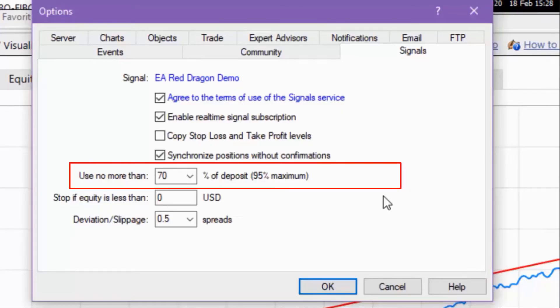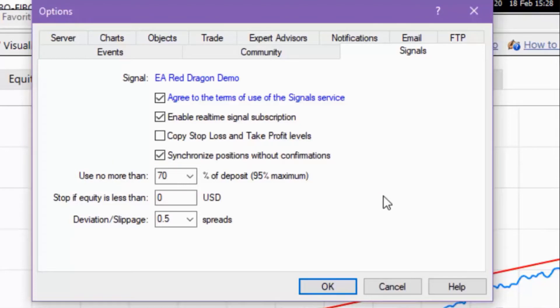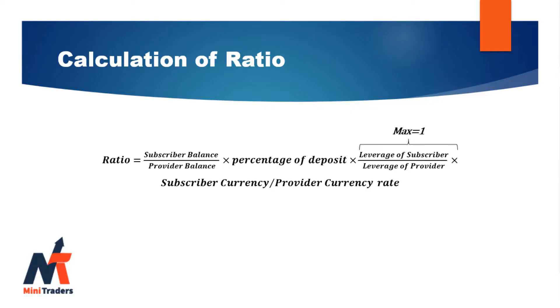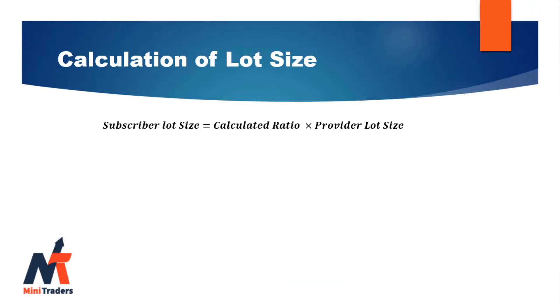When you are subscribing to a signal, you can set a percentage. We would need this percentage in our calculation. To find the lot size, we first calculate a ratio, and this ratio will give us the lot size in the subscriber account. This formula calculates our ratio considering balance, leverage, and balance currency in both the provider and subscriber accounts. Then we can derive our lot size using this ratio.